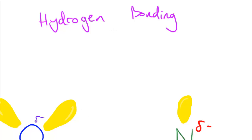In this video I'm going to be talking about hydrogen bonding. Hydrogen bonding is a type of intermolecular force — we could just call them hydrogen bonds. This is similar to the permanent dipole-dipole forces I talked about in the last video, except hydrogen bonds are stronger than permanent dipole-dipole forces.